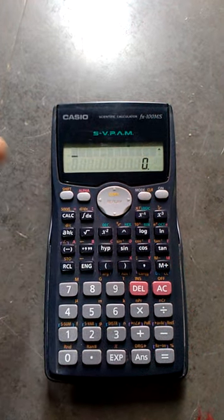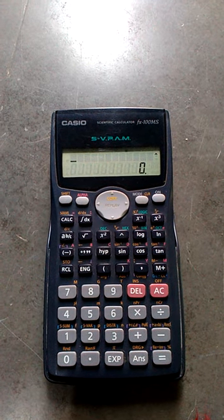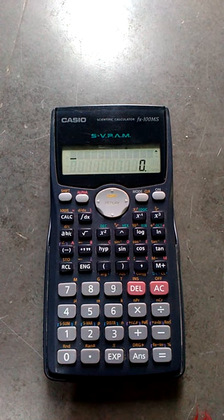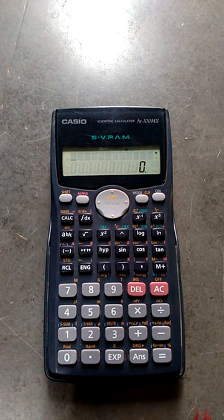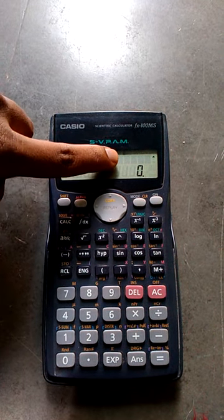So today we are going to show the conversion from radians to degree using Casio calculator. First of all, you should keep your calculator in the default mode, that is the degree. You can see here we have the D here on the screen.